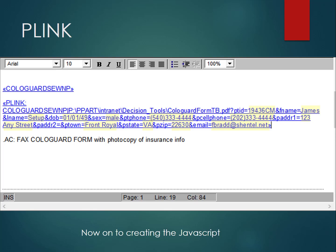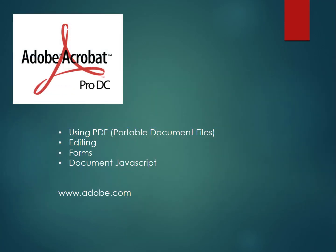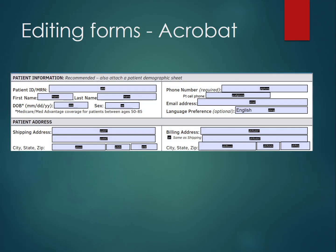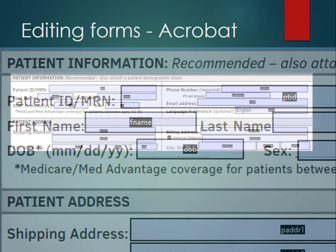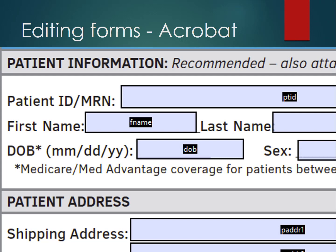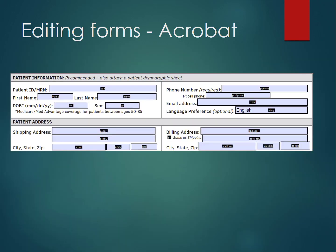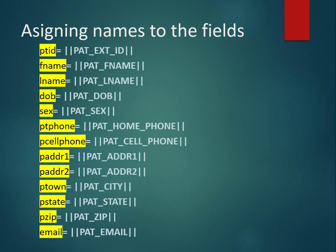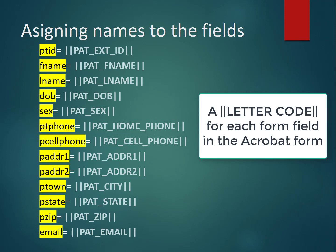Now we move on to creating the JavaScript in the document. We've used the PDF for editing, and now we go to forms and then the document JavaScript. When you're in the forms function of Acrobat, you give different fields various attributes — one of which is the name of the field. The fields PTID, first name or FName, DOB, and PAddress1 all correspond to the variable part of the form, and you have to assign those names.